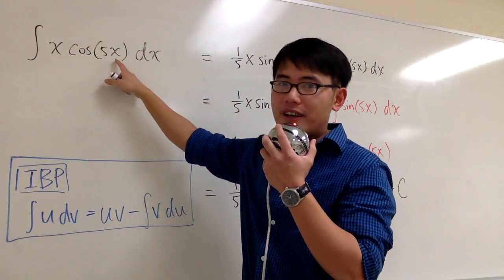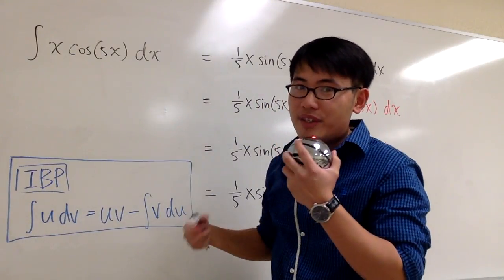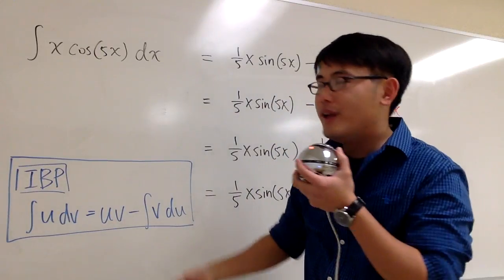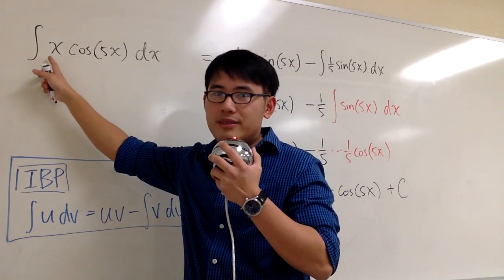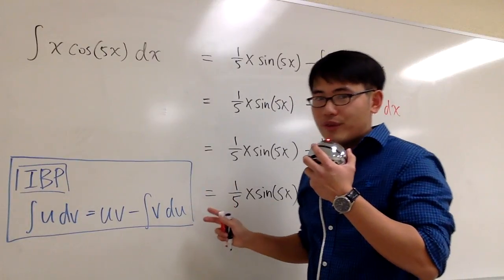Maybe we can say that u is equal to 5x, but then the derivative of 5x is just a 5. We cannot cancel out the x right here. So the u-substitution wouldn't work for us.